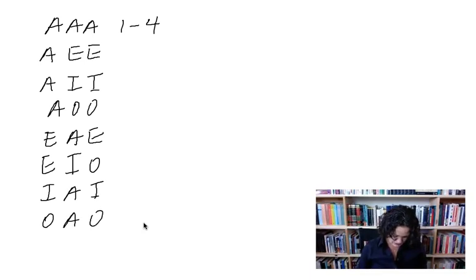We have AAA, figures one through four. And we have AEE, AII, AOO, EAE, EIO, IAI, and OAO. So, let's number these. One, two, three, four, five, six, seven, eight.